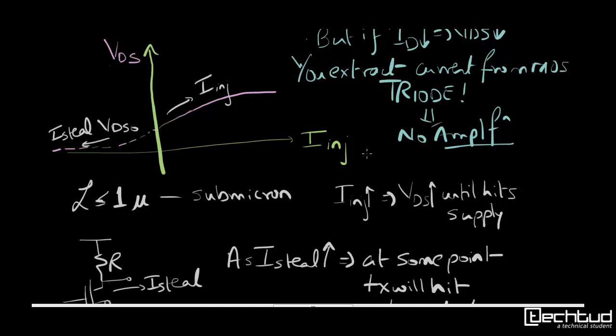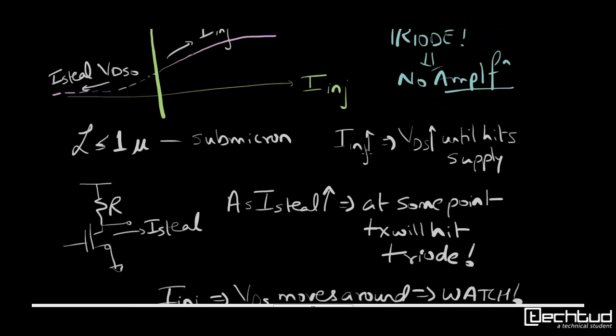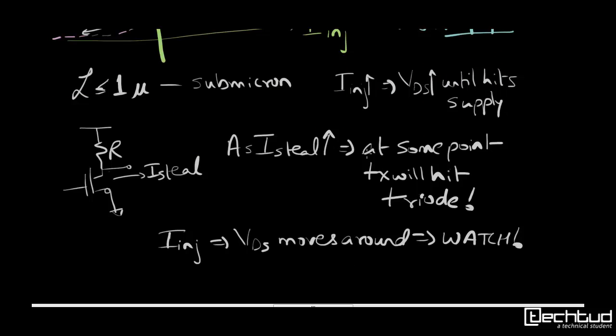So this was all from today's lecture. Please remember that if you are changing or fluctuating the current that is going into the transistor, the transistor can leave saturation region. So this was the conclusion of today's lecture. Thank you.